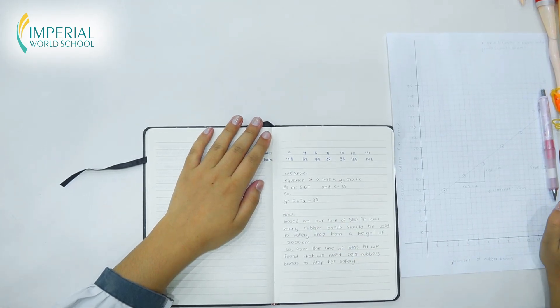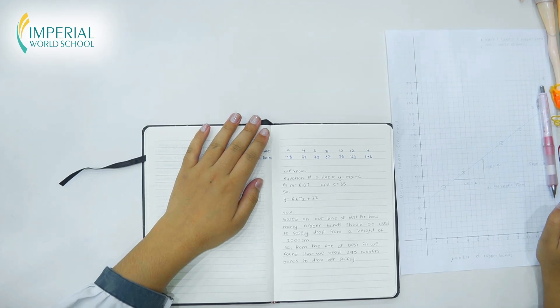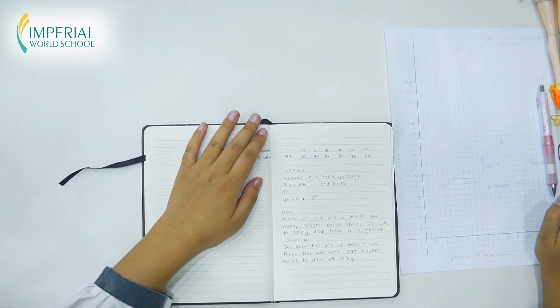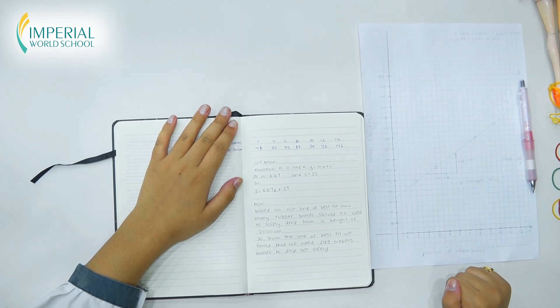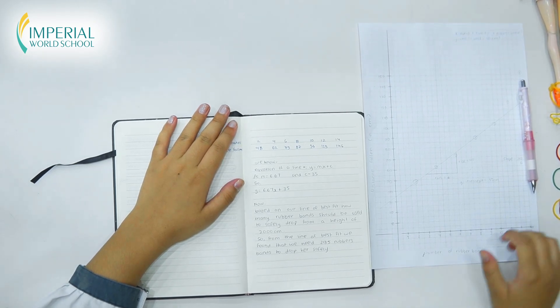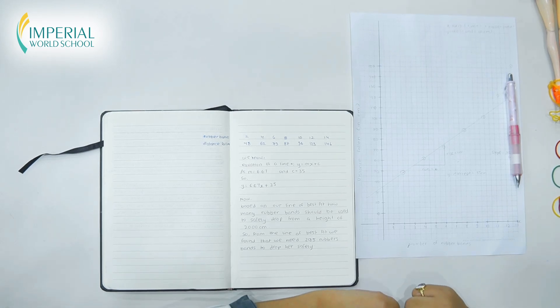Now, based on our line of best fit, how many rubber bands should be used to safely drop from a height of 2000 centimeter? Through the equation, we have found that 295 rubber bands are required to drop her safely from the height of 2000 centimeters.